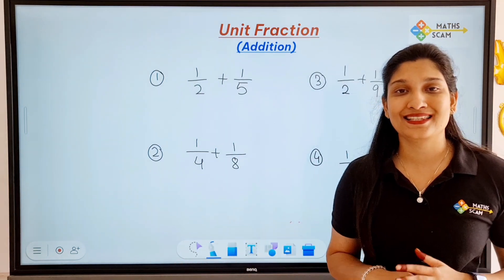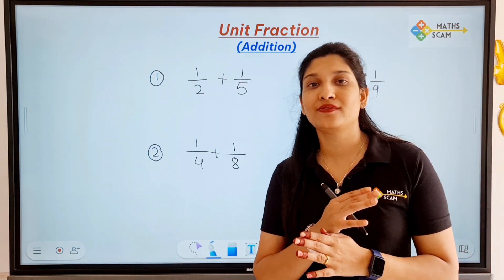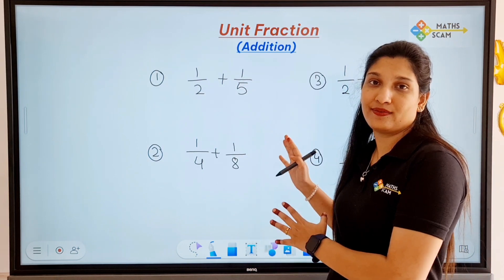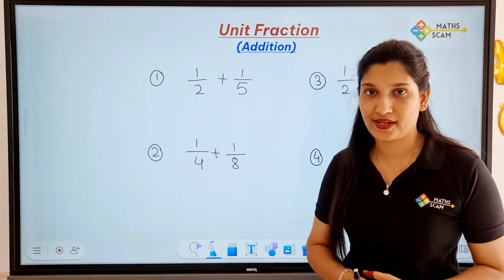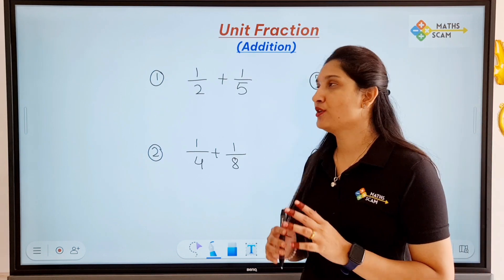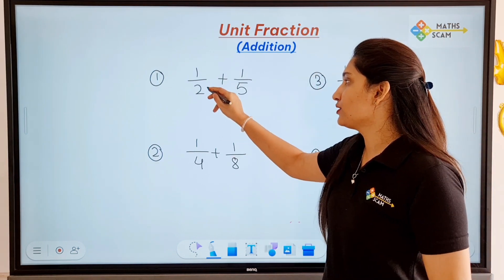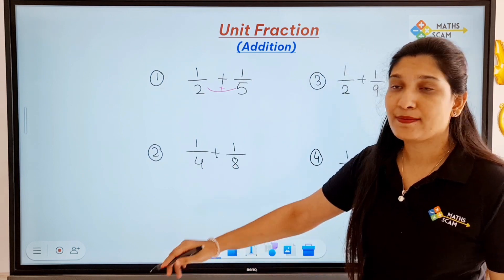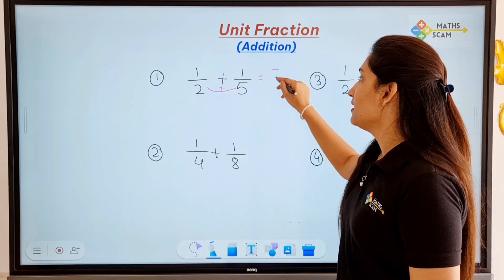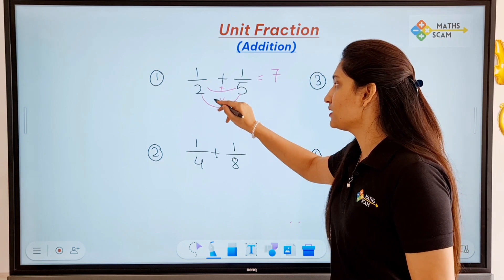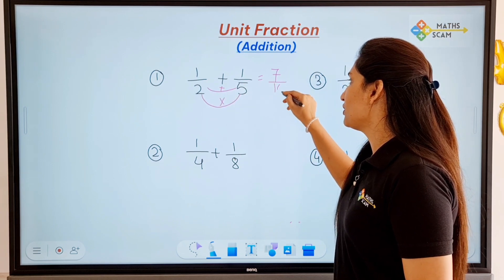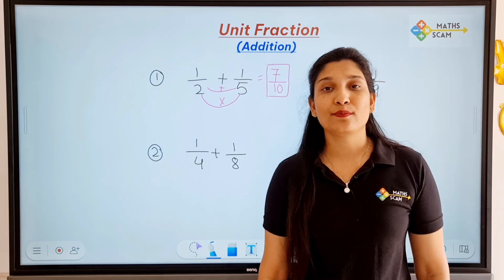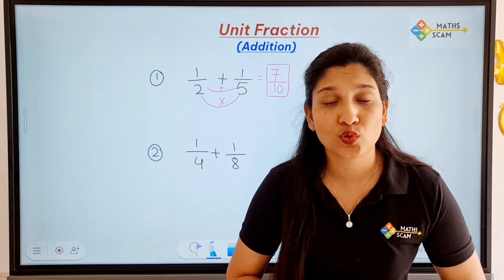Traditionally, we solve these using the LCM method or cross multiplication method — we make them like fractions and then do the addition. But what we are going to do is just add these two denominators: 5 plus 2 is 7, then multiply both denominators: 5 twos are 10. So the answer is 7 by 10. Very easy.